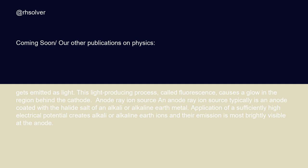An anode ray ion source typically is an anode coated with the halide salt of an alkali or alkaline earth metal. Application of a sufficiently high electrical potential creates alkali or alkaline earth ions, and their emission is most brightly visible at the anode.